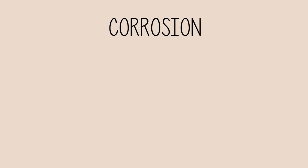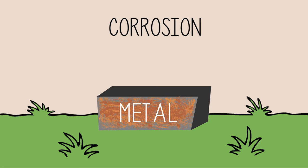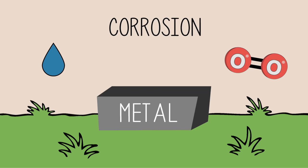The term corrosion is used to describe the breakdown of a metal when exposed to the environment. When we say a metal corrodes, we mean that it has reacted with water and oxygen from the environment to form their respective oxides.